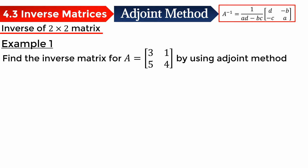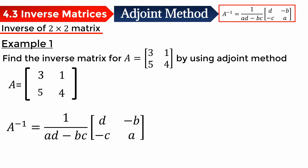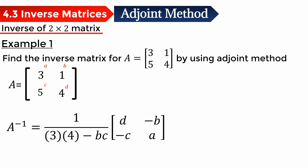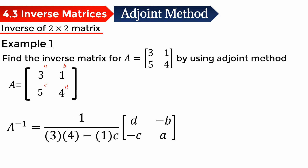Following this, we need to use the formula. So the formula is 1 over (AD minus BC) times that matrix. We just plug in the corresponding values into this formula. If we need a reminder, we can label the matrix A with A, B, C, D — so A is 3, B is 1, C is 5, and D is 4.